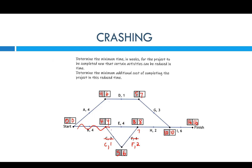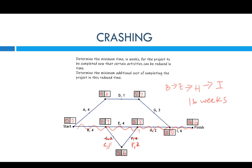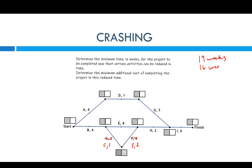The new critical path is this straight line going this way. The new critical path is now B, E, H, and I, giving me 16 weeks. Before it was 19 — now it is 16. When we reduced C and F by two weeks each, because they were on that critical path, we got down to 16 weeks.